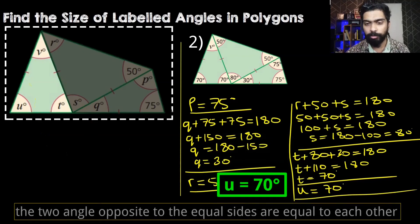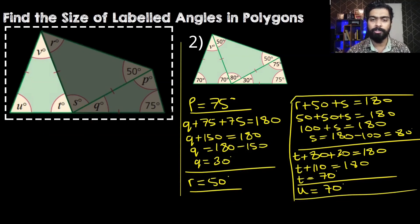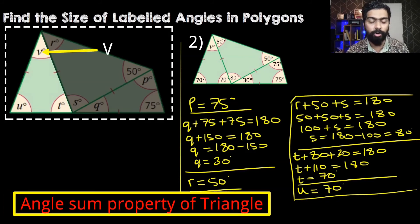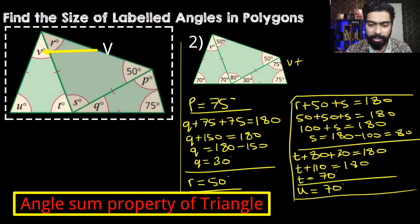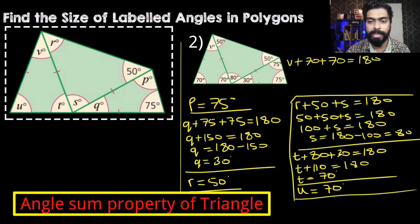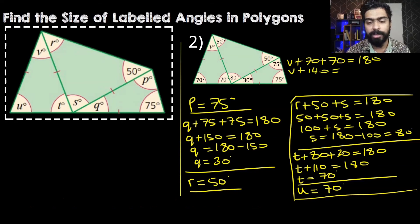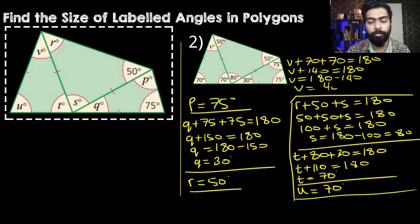Now for the final step, we see that V plus U plus T equals 180. So V plus angle U which is 70 degrees plus angle T which is 70 degrees adds up to 180. So V plus 140 equals 180, and therefore V is equal to 40 degrees.